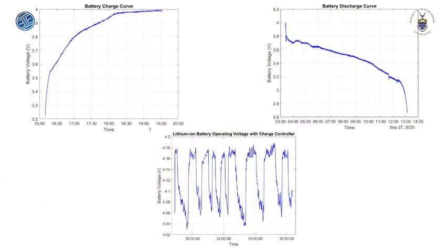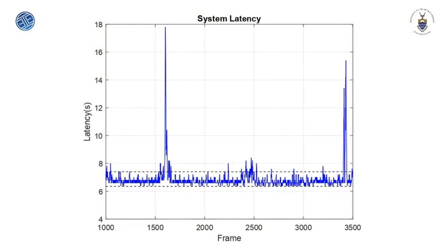The onboard power ensures that a user can still control the system when there is a power outage. The system can operate for 9 hours 14 minutes using the lithium-ion battery, which takes 3 hours 15 minutes to recharge. The latency to request a command or a complete schedule from the server lies between 6.4 and 7.7 seconds.